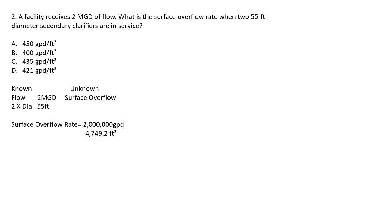Plugging into the formula: 2,000,000 gallons per day divided by 4,749.2 square feet gives 421 gallons per day per square foot. The answer is D.